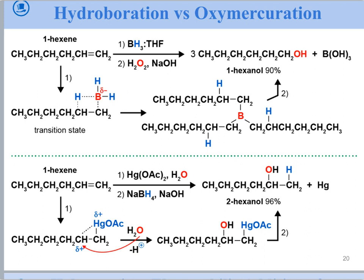To summarize and compare: in hydroboration, you get the anti-Markovnikov product — the OH ends up on the less substituted carbon — and it's a syn addition. You're responsible for knowing the first step (pi bond reacts with boron). In oxymercuration, you get the Markovnikov product and trans addition. You form the mercuronium ion (three-membered ring), do an SN2 where the solvent reacts with the more substituted carbon, get mercury and OH on opposite sides, and then mercury is replaced by hydrogen — giving trans stereochemistry.